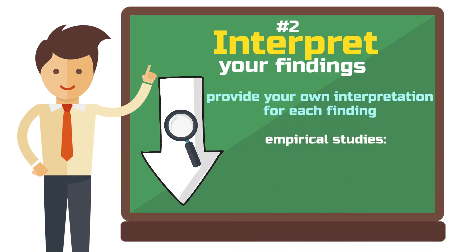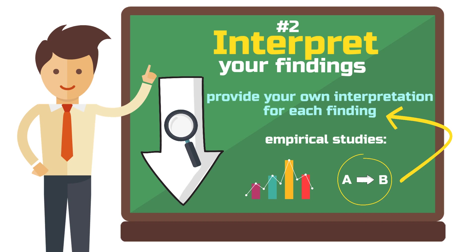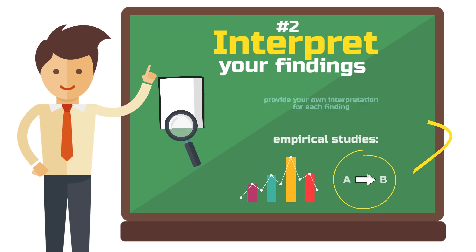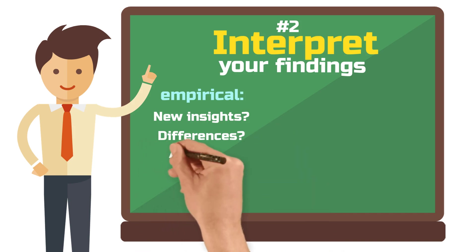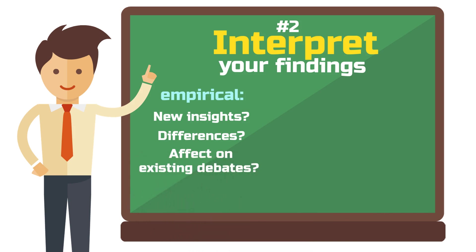For empirical studies, you can think about the following. For example, if the influence of variable A on variable B is statistically significant, the results section will simply state that this is the case — usually presented in the form of tables and figures, accompanied by some descriptive text. In the discussion, you are now allowed to assess what it actually means for a significant effect to exist in this context. The same principle applies to qualitative studies. Ask yourself: what do your findings add to existing literature? How are your results different from results other researchers have found? And how does this affect an existing debate in your field of study?